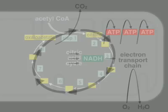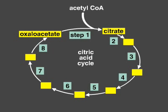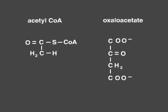The molecule that enters the citric acid cycle is the two-carbon compound acetyl-CoA. Acetyl-CoA joins with the four-carbon oxaloacetate to create the six-carbon citrate. We'll track the carbons from acetyl-CoA with a red color, while the two carbon atoms from oxaloacetate marked in blue will be released during this cycle to form carbon dioxide.